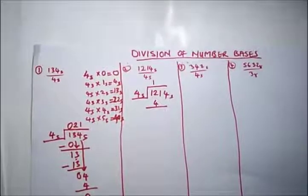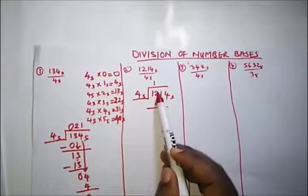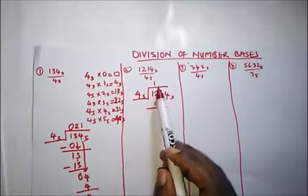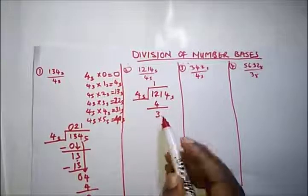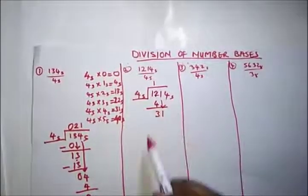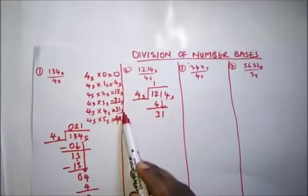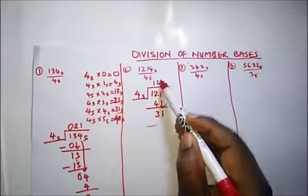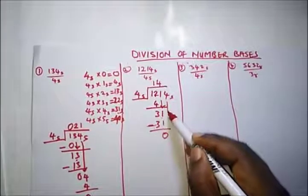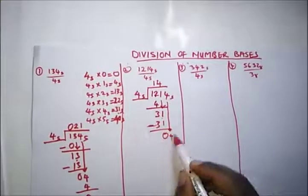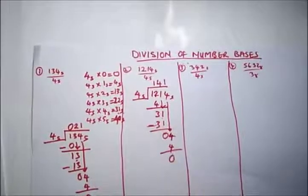2 can't subtract 4, so we borrow 1. Since we're working in base 5, that borrowed 1 equals 5. So 5 plus 2 is 7, and 7 minus 4 is 3. Bring down 1, giving us 31 base 5. From our table, 4 times 4 in base 5 is 31 base 5, so it goes 4 times. Subtract to get 0. Bring down 4. 4 into 4 goes 1 time, giving 4, subtract to get 0. Answer is 141 base 5.